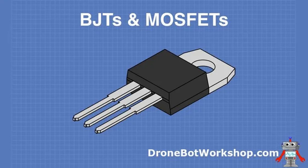MOSFETs are also crucial in switching voltage regulators, where the MOSFET is used to switch the input voltage on and off rapidly. An inductor and capacitor are then used to filter and regulate the output voltage. Switching regulators are generally more power-efficient than linear regulators.